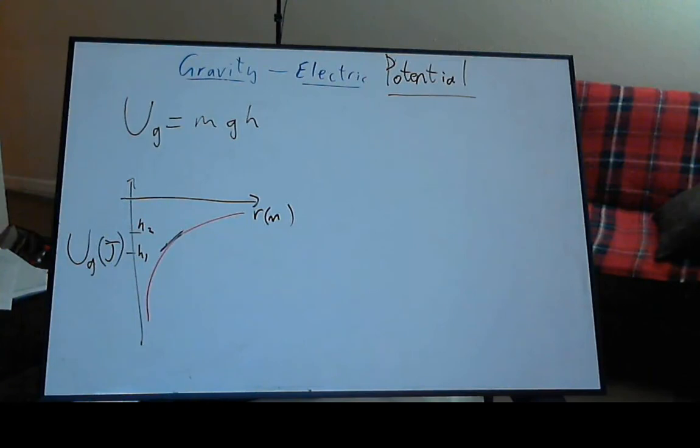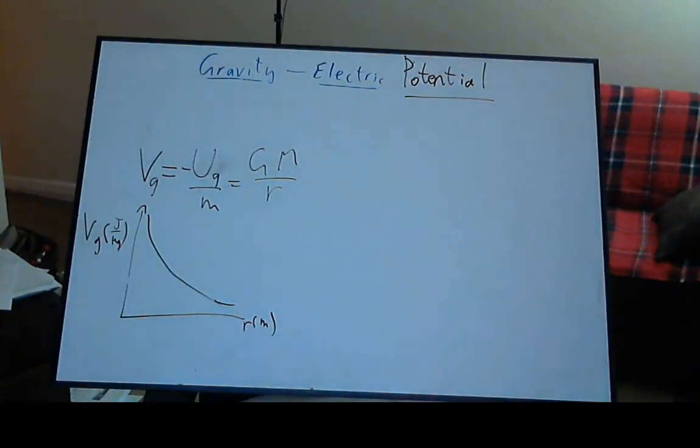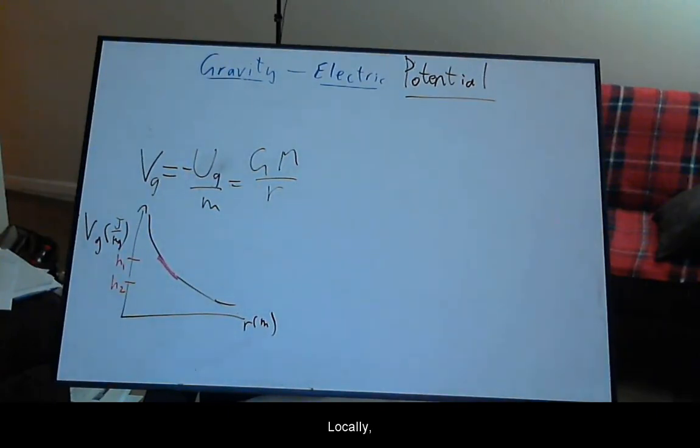Locally, it can be approximated as a linear function increasing with height. One can then define a potential per test mass that is inversely proportional to the distance. Locally, it can be thought of as going downhill.